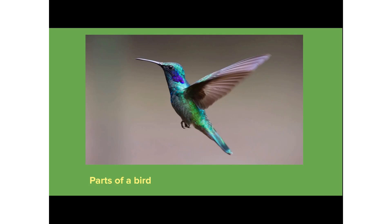Continuing to teach children about birds, like in the previous example about nests, you can talk about the different parts of a bird. You can ask the child what helps the bird fly and they can identify the wing. You can also point out the beak and why birds have beaks, and compare and contrast different types of birds and their parts.